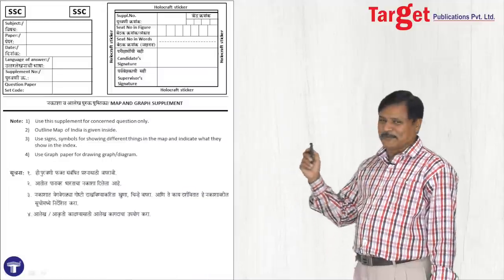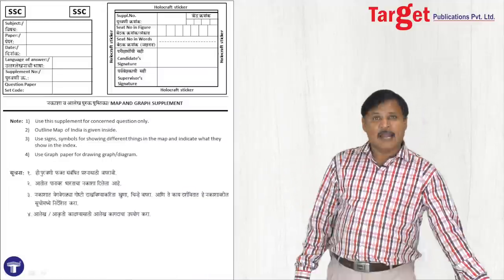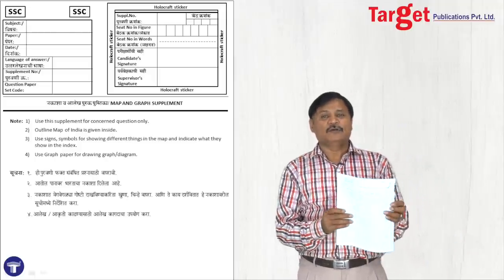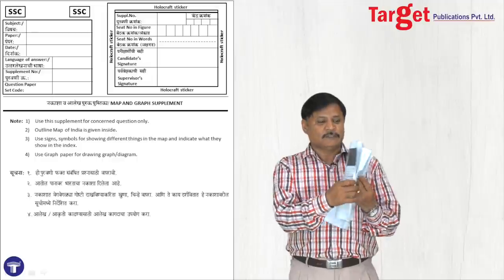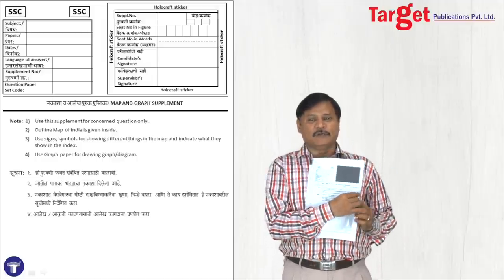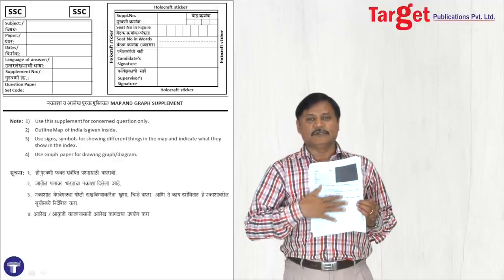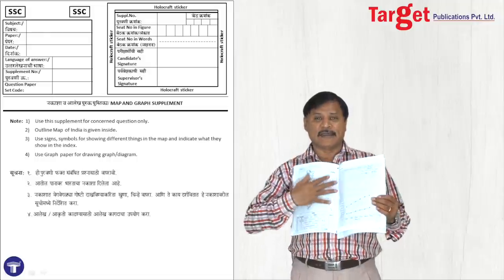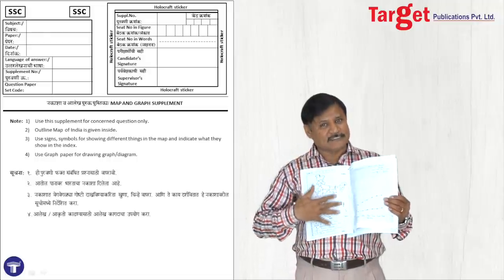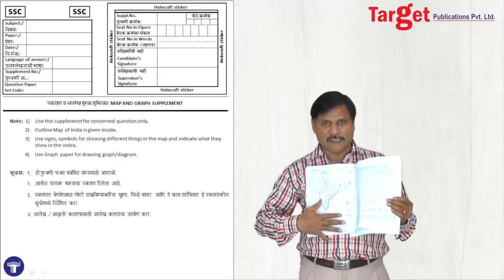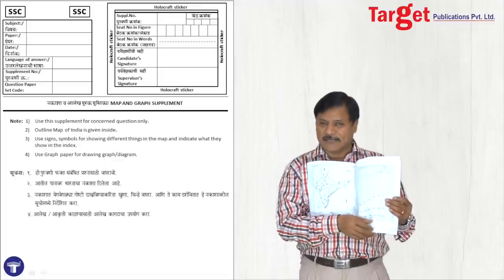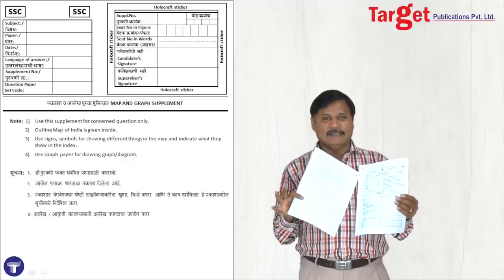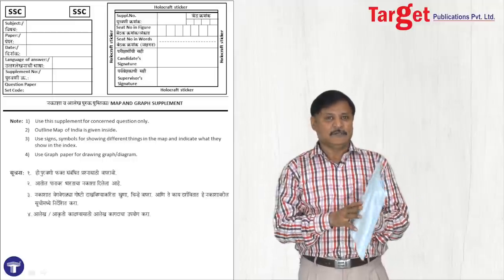Now, your graph paper and map paper — your graph sheet and map sheet are a four-page leaf. Page 1 is where you fill the details. The map will be there — if it is Brazil, Brazil will be there; if it is India, India will be there. Your graph sheet is also there. The last page is where you write the graph details. So it is a 4-page leaf.